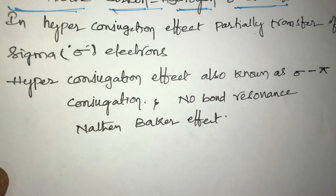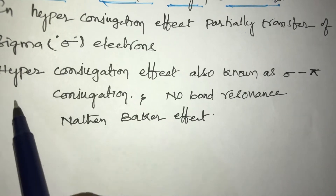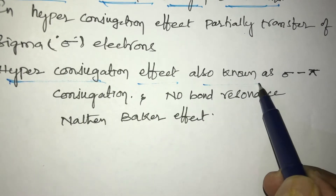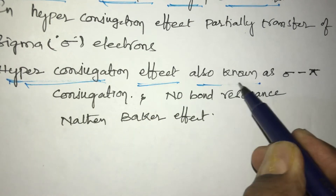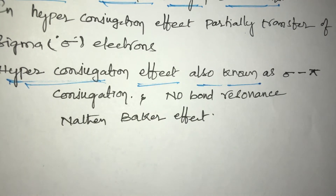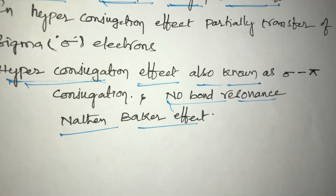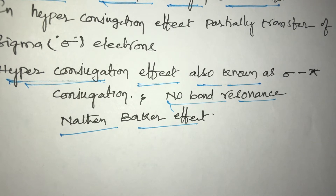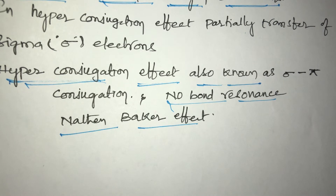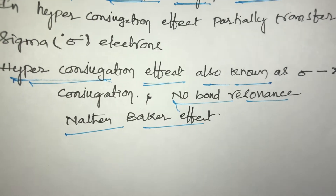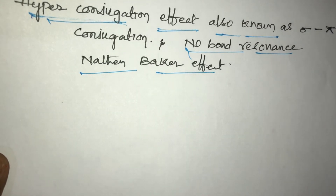Hyperconjugation effect is also known as sigma-pi conjugation, or no-bond resonance, or the Baker-Nathan effect.